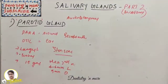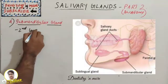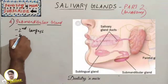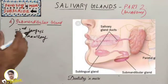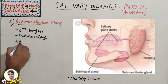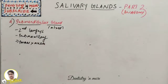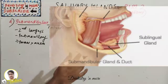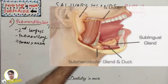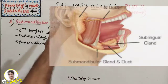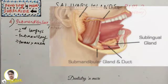The submandibular gland is the second largest salivary gland, also called the submaxillary gland. It is a mixed type of gland with both serous and mucus secretion, but serous is predominant over mucus. Its superficial part fills the digastric triangle, while the deeper part is deep to the mylohyoid and superficial to the hyoglossus and styloglossus muscles.